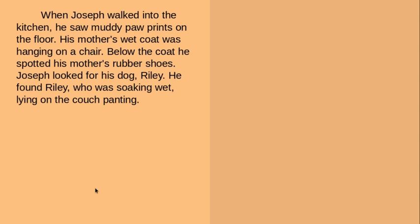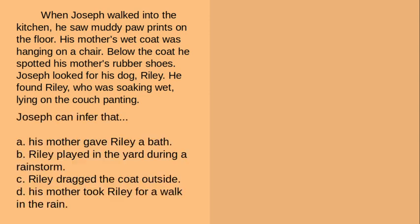Last one. When Joseph walked into the kitchen, he saw muddy paw prints on the floor. His mother's wet coat was hanging on a chair. Below the coat, he spotted his mother's rubber shoes. Joseph looked for his dog, Riley, and found him soaking wet, lying on the couch, panting. Joseph can infer that: A, his mother gave Riley a bath; B, Riley played in the yard during a rainstorm; C, Riley dragged the coat outside; or D, his mother took Riley for a walk in the rain. Pause the video — you know what to do.